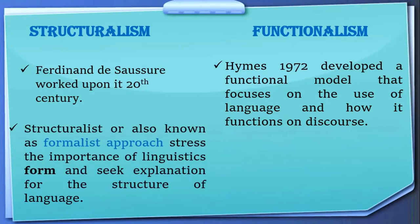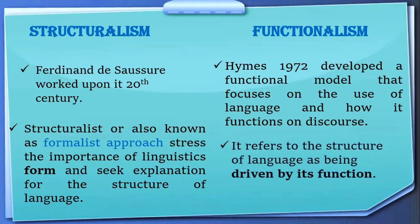A structuralist, also known as a formalist approach, stresses the importance of linguistic form and seeks explanation for the structure of language. So structuralism is essentially a formalist approach concerned with the form and order of language. Functionalism, on the other hand, refers to the structure of language as being driven by its function — that language is used because there are certain functions to perform.